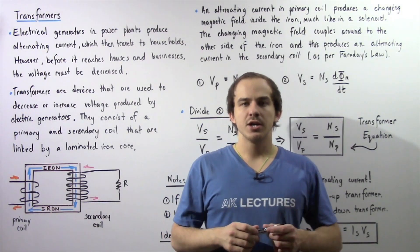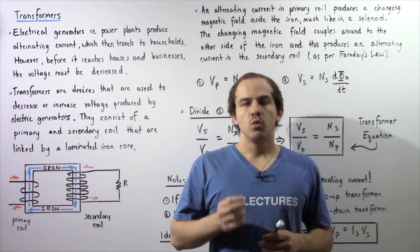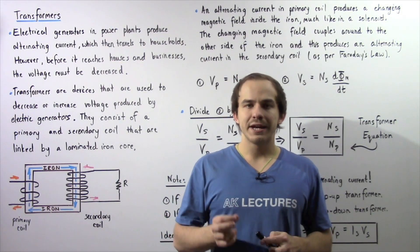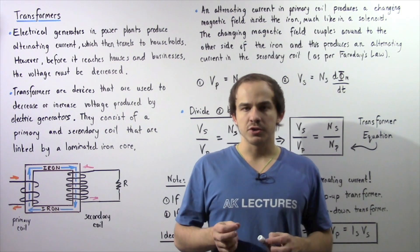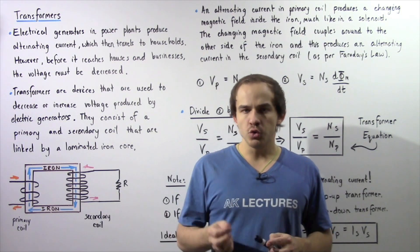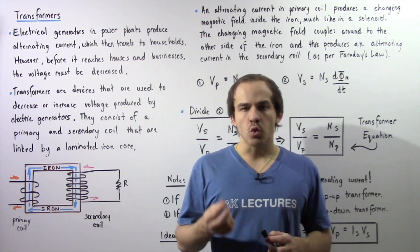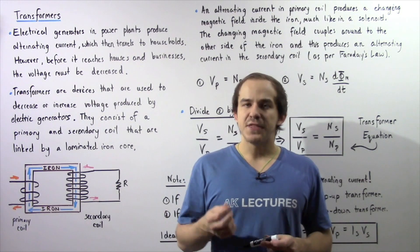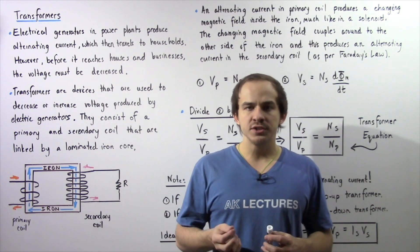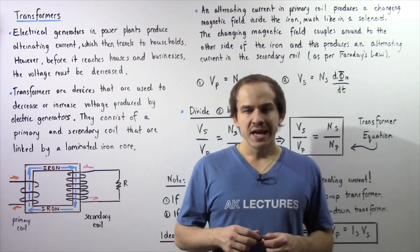In our discussion on electric generators, we said that inside an electric generator, an EMF is induced that varies sinusoidally. And that induced EMF creates an alternating electric current.